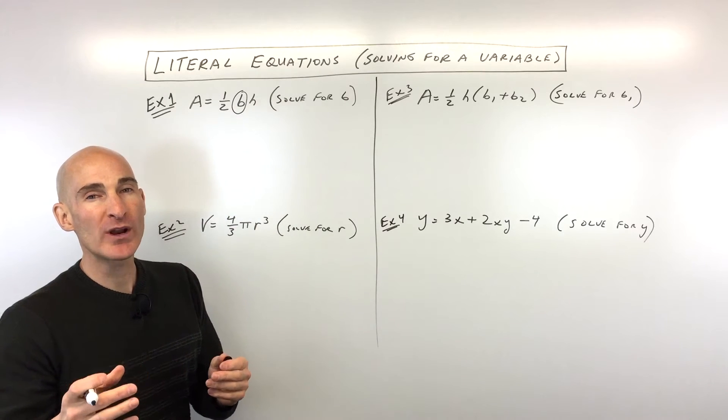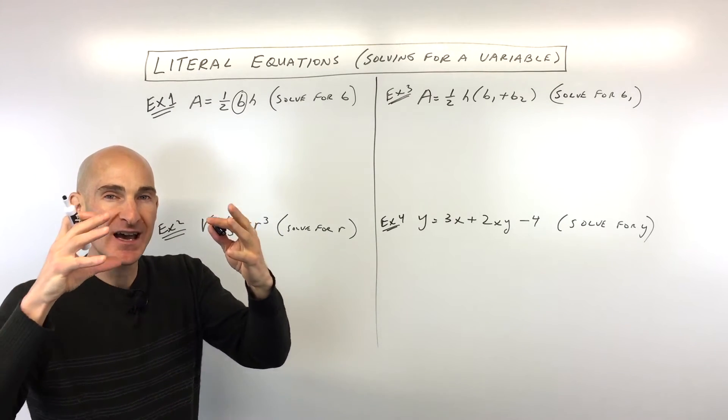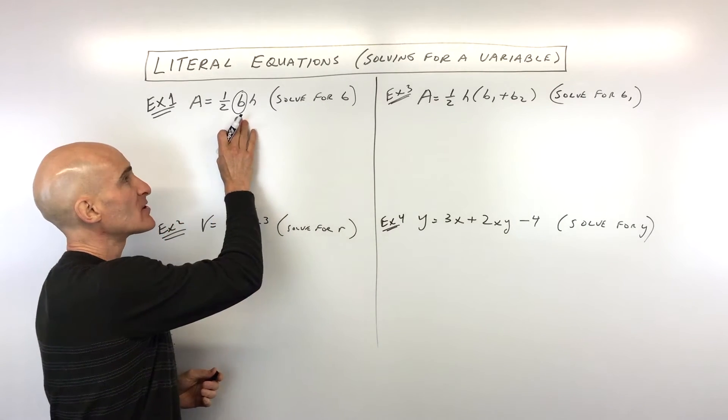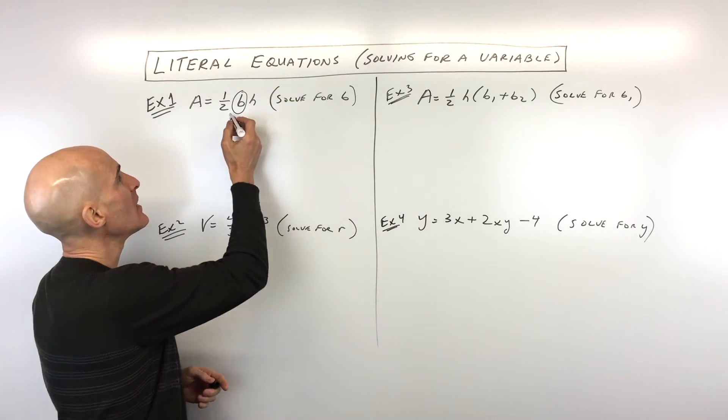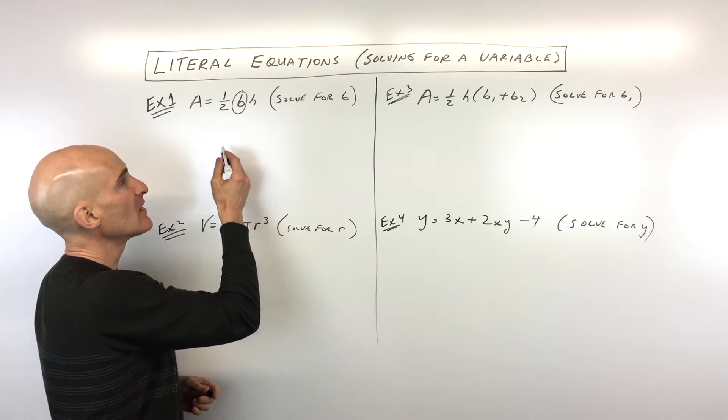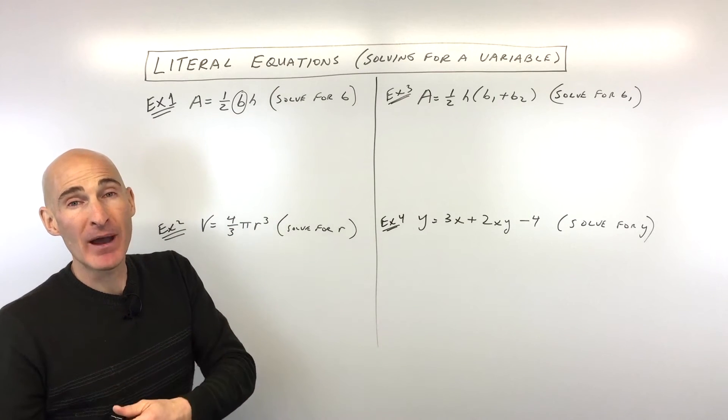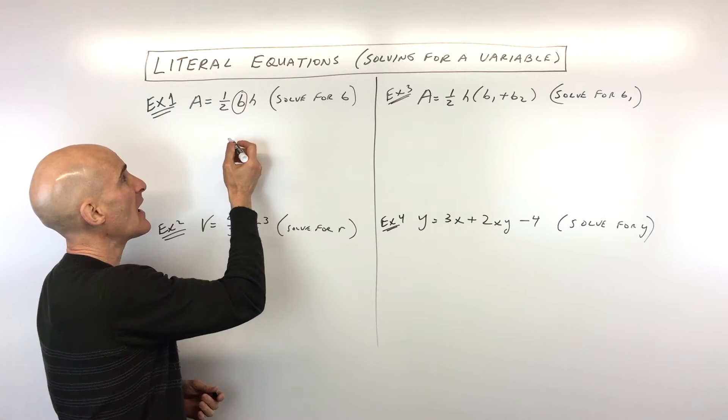That's a good question, right? Well, what you want to do is you want to think about working from the outside in towards that particular variable by doing the opposite operation. So I'll show you what I mean. See how we're multiplying by one-half? What you can do is you can divide by one-half. That's the opposite to get rid of this one-half.